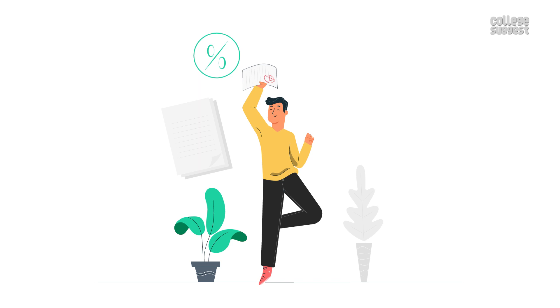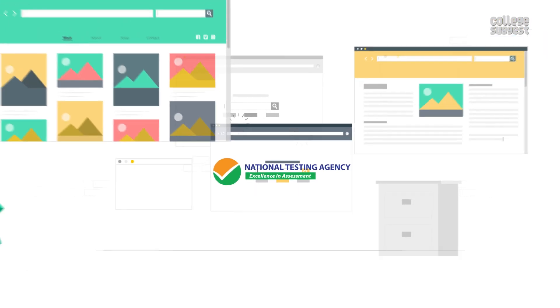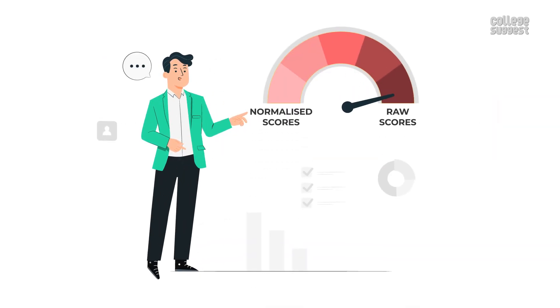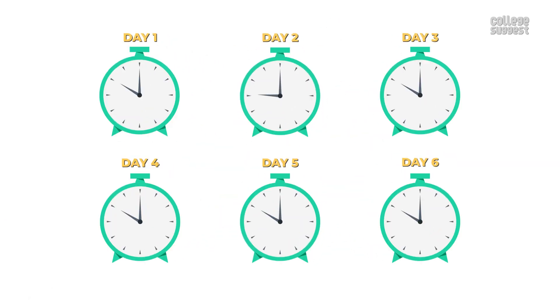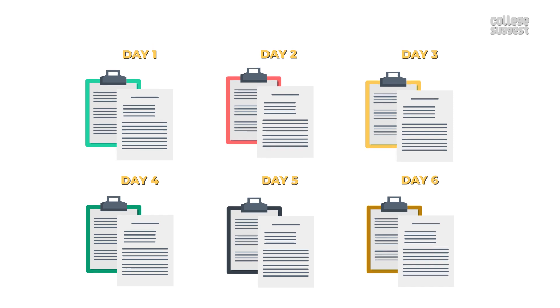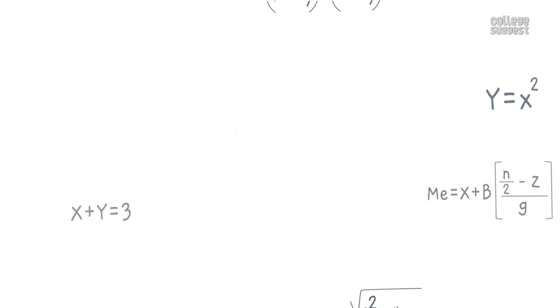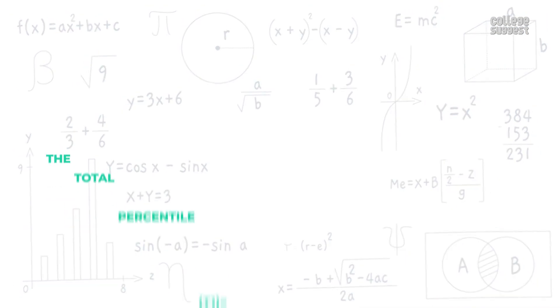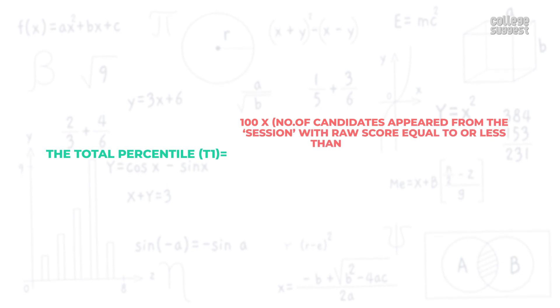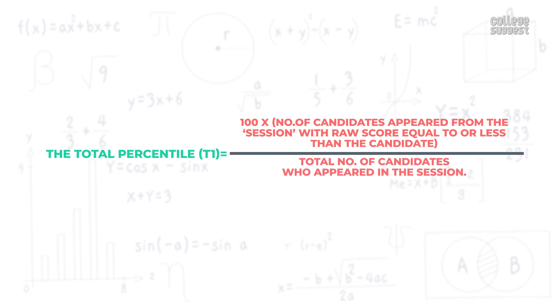Now let's take a look into percentiles, ranks, scores and other details. NTA usually releases the student's marks as percentiles on their official website. The marks which NTA releases are not the actual raw score of any student — NTA uses a normalization method to calculate results. The first session of JEE Main will be conducted for six days with two shifts each day, and every day there's a different question paper, bringing a possibility of the paper being easy or tough. In order to eliminate this difference, the NTA observes a normalization method. The formula used to calculate percentile is as follows: the total percentile (T1) equals 100 multiplied by the number of candidates who appeared from the session with a raw score equal to or less than the candidate, divided by the total number of candidates who appeared in the session.